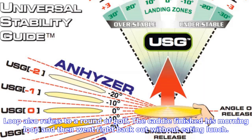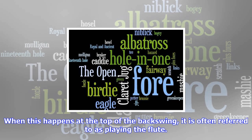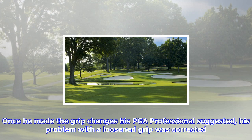Inside to inside: a description of the swing path that, all things being equal, will produce the greatest percentage of solid, straight and on-target shots. It refers to a path in which the club head travels from inside the target line, to impact, and then back inside the target line. Once she developed an inside-to-inside swing, her ball striking improved dramatically.